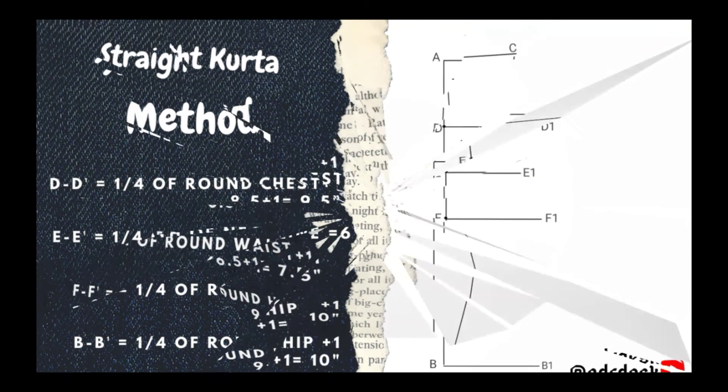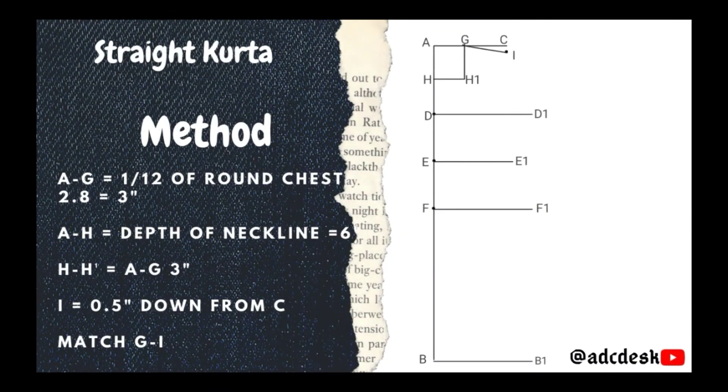Then we will add A to G, one-twelfth of round chest, neckline width, that is 2.8. But here we are taking it in our round figure, so 3 inches, which is the basic neckline measurement. A to H, depth of neckline. Here I'm taking 6, or it can be desirable. It can be 5, it can be 4, or it can be 7.